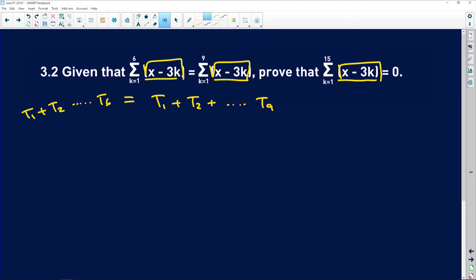So remember sigma notation: if you have k equals 1 and you have 6 over there, it means that if you substitute k equals 1 into this expression, you're going to have x minus 3 plus x minus, if I substitute k equals 2, minus 6.